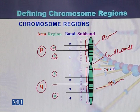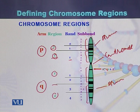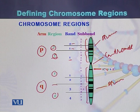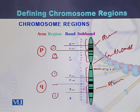Each region consists of bands. Within region one there is only one band, while within region two there are two bands: band one and band two. In case of the Q arm, region one consists of two bands — band one and band two — while region two contains band three and band four.